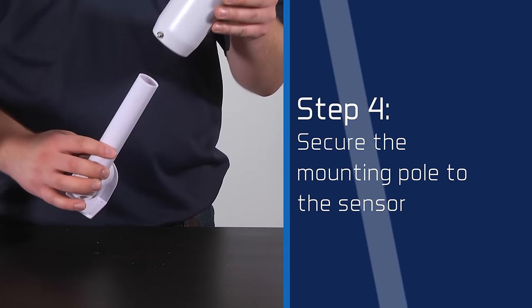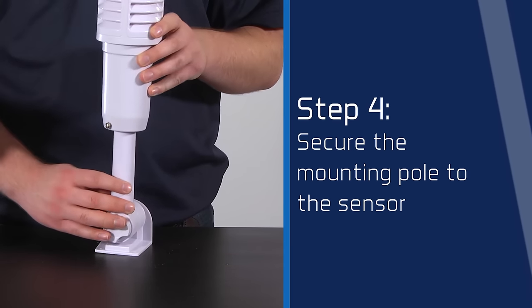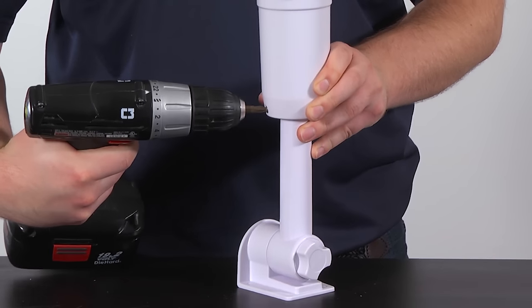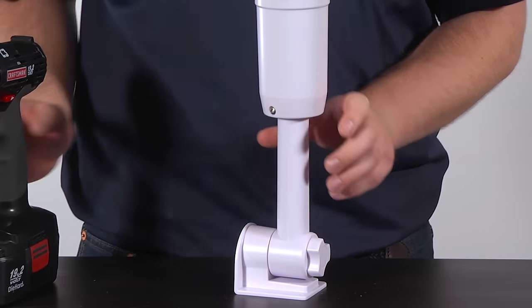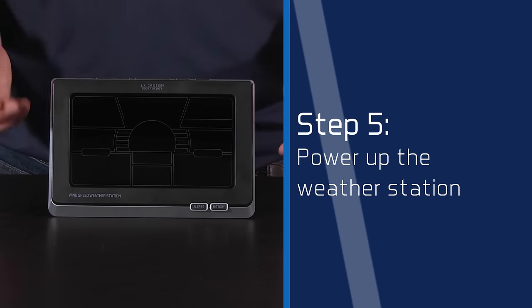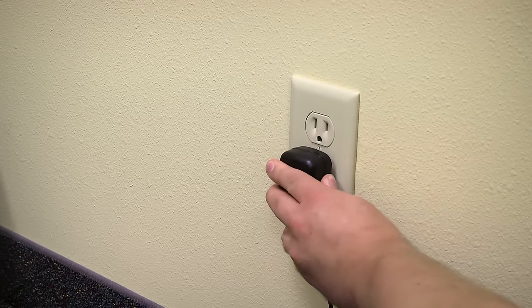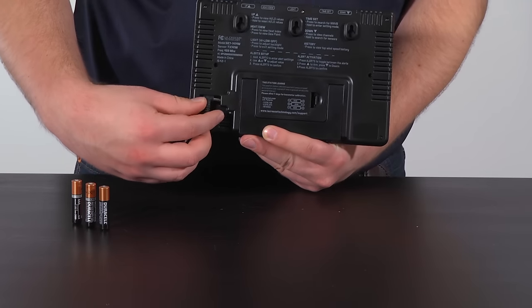From here, we can insert the pole into the bottom of the sensor and secure it with the two screws provided. Now for step five, we can finally power up the weather station itself. Insert the 5-volt AC adapter into the wall outlet and then into the back of the station.